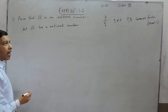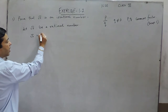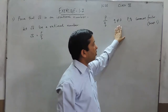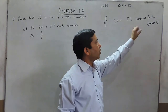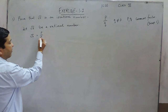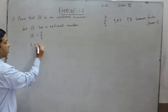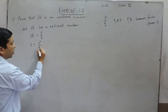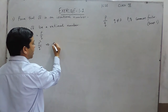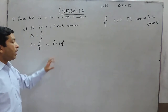Now, if under root 5 is a rational number, then under root 5 can be written as P upon Q, where Q is not equal to 0, and P and Q have no common factor except 1. When we square both sides, it becomes 5 is equal to P² upon Q², or which can be written as P² is equal to 5Q².